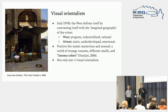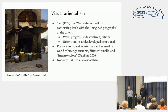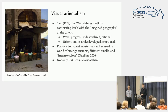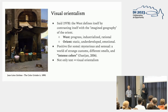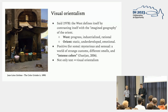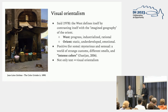The Oriental world will probably ring a bell for many of you — this is directly connected to the work of Edward Said, who posited that the West has defined itself by contrasting itself with what he calls the imagined geography of the Orient. In a symbolized version, the West is imagined as a world of progress, industrialized and rational, while the Orient is seen as its mirror image — static, underdeveloped, and emotional. Positively, for some painters and writers, the Orient is also seen as mysterious and sensual, full of strange customs, different smells, and very intense colors. Said mainly focused on text, but since his book many have extended his work to include visual culture — this is visual Orientalism.